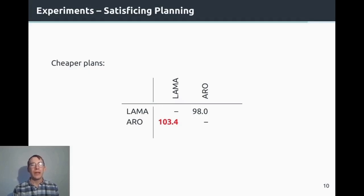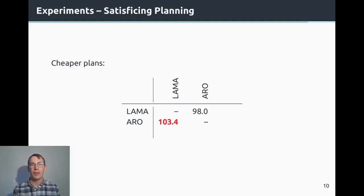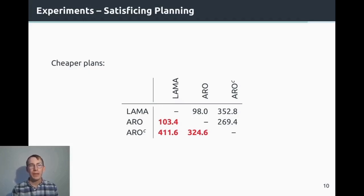One more thing: LAMA requires that the landmark graph is acyclic, because cycles result in an infinite chain of unaccepted landmarks, so all landmarks in the cycle would never be accepted. With RO, this is not a problem anymore. We wondered what happens if we don't remove cycles during computation of the landmark graph — and we found that even more instances were found to have a cheaper plan than the original LAMA implementation. So cycles introduce additional information that is valuable.